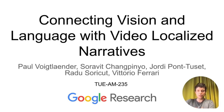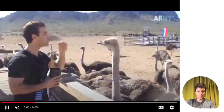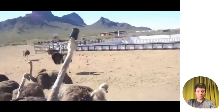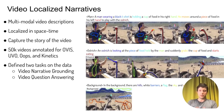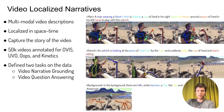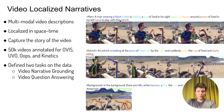I am Paul Voigtländer from Google Research, presenting Connecting Vision and Language with Video-Localized Narratives. We want to annotate complex videos by creating multi-modal video descriptions that are localized in space-time and capture the story of the video. We annotated 50,000 videos from the datasets OVIS, UVO, OOPS, and Kinetics. On top of this, we defined two tasks: Video Narrative Grounding and Video Question Answering. For each actor separately we have a text description, and almost each word is localized in space-time. For example, the word ostrich is shown in dark red and localized on different keyframes.